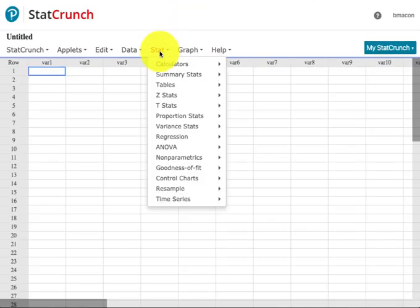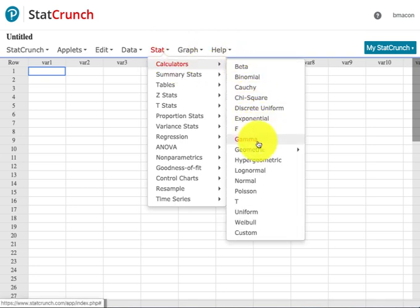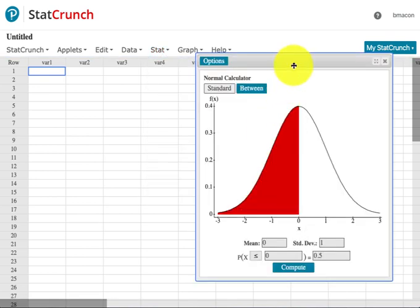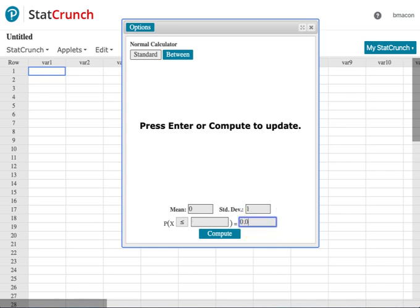When I'm inside StatCrunch, I'm going to click Stat and then hover over Calculator. Because I'm doing a z variable, I'm going to call up the Normal Calculator. I'm doing 0.08 in the left tail. Whenever I'm looking for a z value, the mean is 0 and standard deviation is 1. I'll type 0.08 in the probability box.